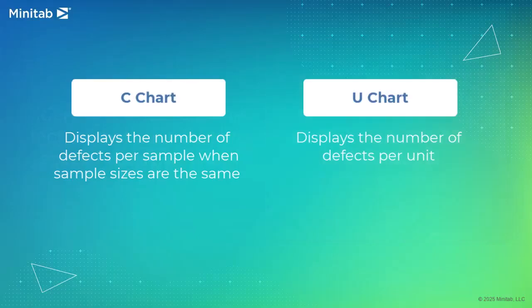Note that you can use a C Chart only when your subgroups are the same size. If your subgroups are not the same size, use a U-chart to monitor the number of defects per unit.